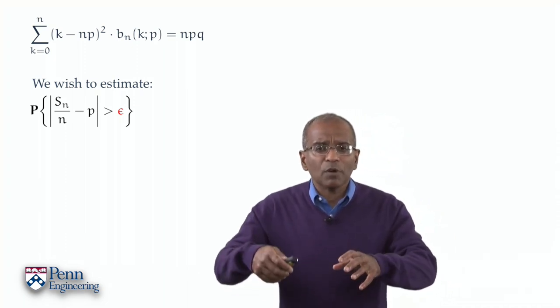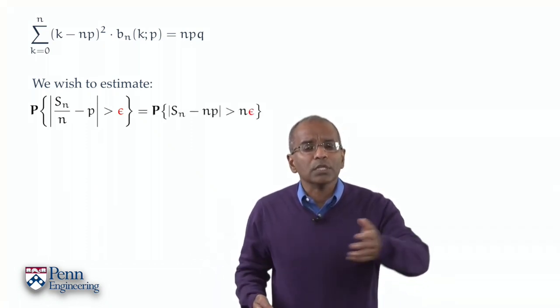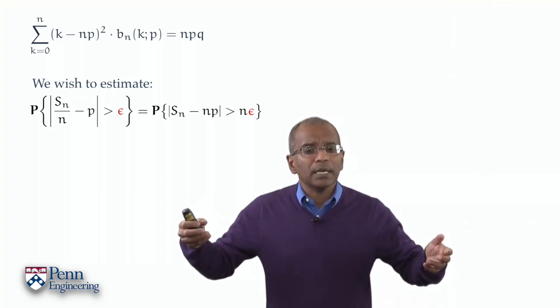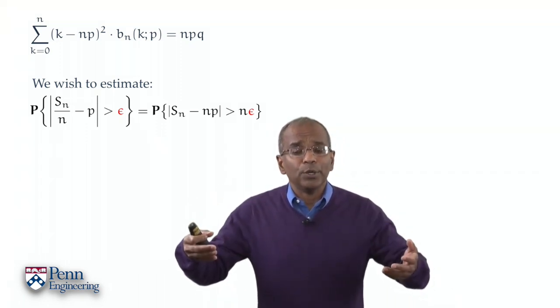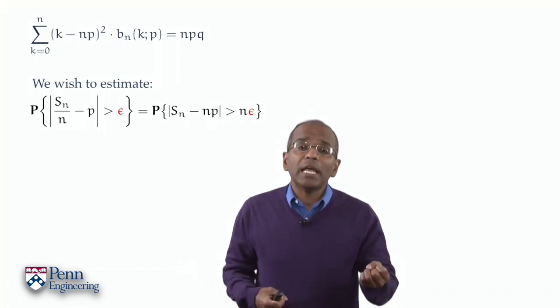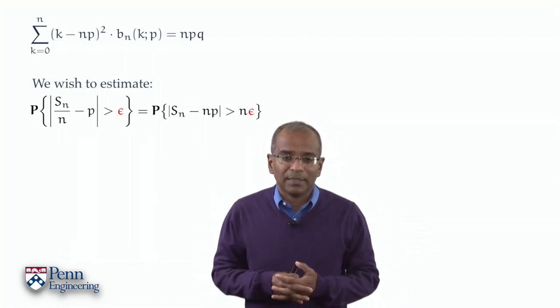Let's promptly write it down in terms of an event. What is the event? Let's clear the denominator by multiplying all terms by n and say that this becomes the probability that an absolute value, the accumulated number of successes S_n, differs from np by more than n epsilon. This is the bad thing.